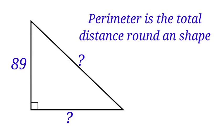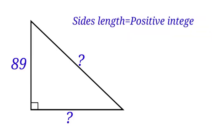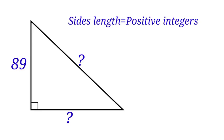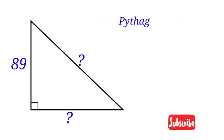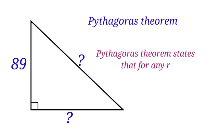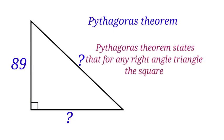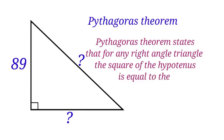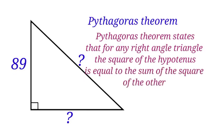We have to find the other two. Take note, the side lengths must be positive integers. We will be using Pythagoras theorem to find the two unknown lengths. Pythagoras theorem states that for any right-angled triangle, the square of the hypotenuse is equal to the sum of the square of the other two sides.